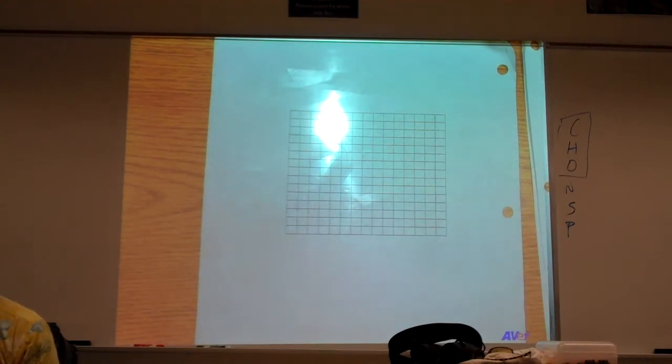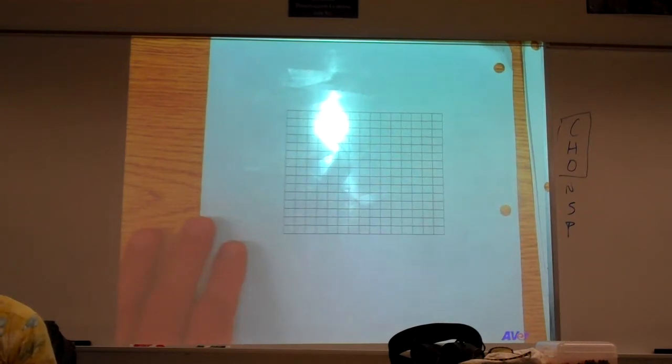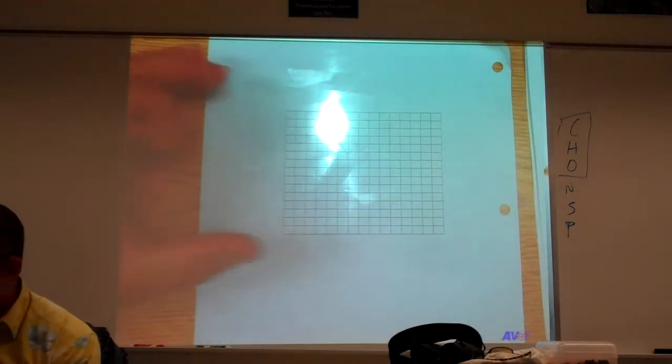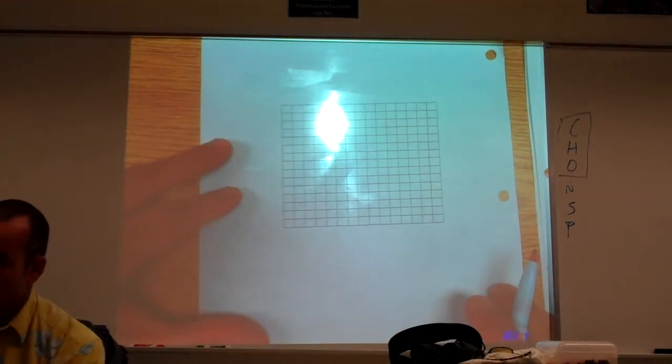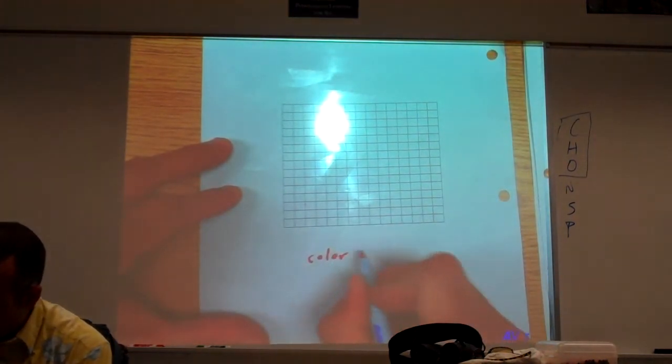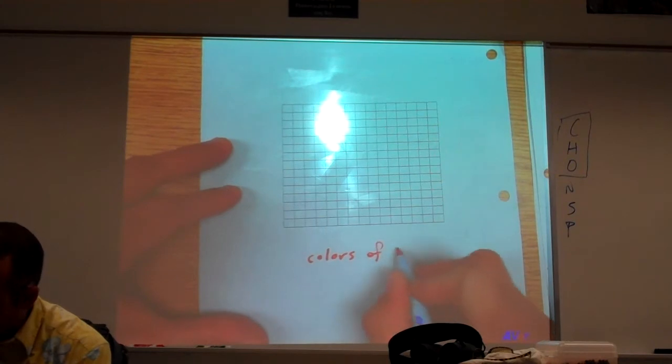All right, so watch. The rules are the same. You're still going to do independent variable on the x-axis, dependent variable on the y-axis. So let's go ahead, and what's our independent variable going to be? Colors of light. So let's label our axis: colors of light.